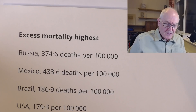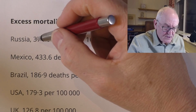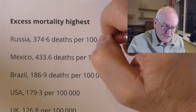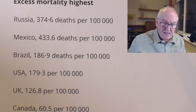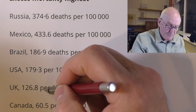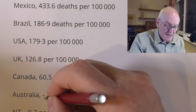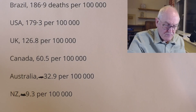Looking at the figures per capita — excess mortality per 100,000. Excess mortality was highest in Russia at 374.6 deaths per 100,000 of the population. Mexico was next at 433, then Brazil, then the United States at 179.3 per 100,000. The UK was 126.8. Canada was 60.5. And again, Australia and New Zealand were both in negative territory, with fewer people dying than would be expected.